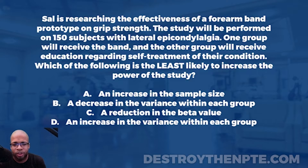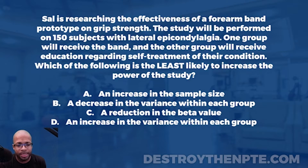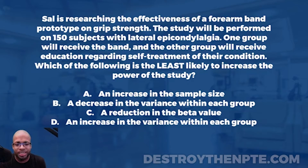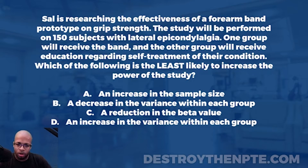Which of the following is the least likely to increase the power of the study? Answer A is an increase in the sample size, B is a decrease in the variance within each group, C is a reduction in the beta value, and D is an increase in the variance within each group.